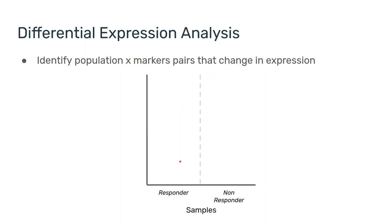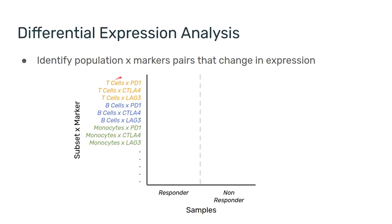Once again, we have the samples on the x-axis, and we have responders versus non-responders, but on the y-axis we have combinations of subsets and markers—T-cells and PD-1 expression, T-cells and CTLA-4 expression, and so on and so forth.